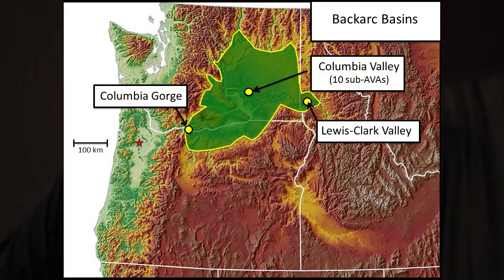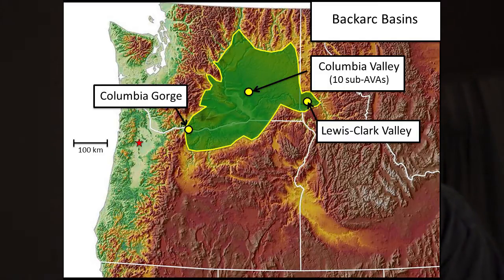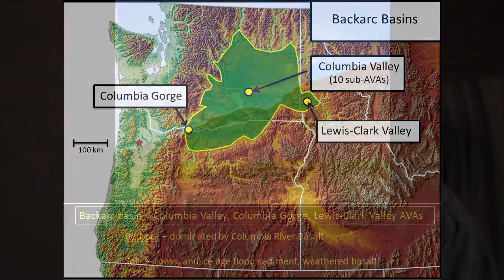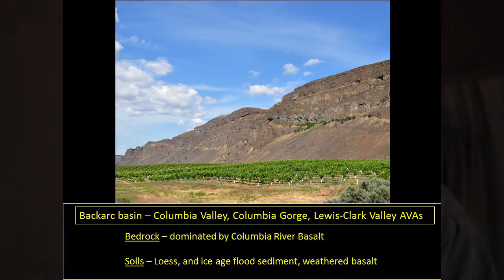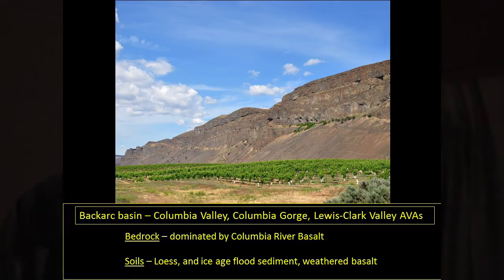The back-arc basin we'll discuss is the Columbia Valley. The bedrock is dominated by Columbia River basalt, and the soils are wind-deposited silt, ice-age flood sediment, and weathered basalt. This is really important to our story — the Columbia River basalts are central to understanding both the Columbia Basin and the Willamette Valley.